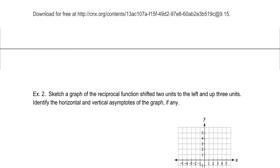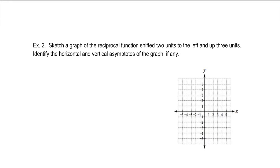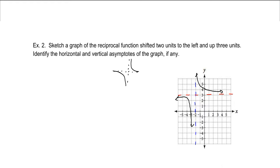For our next example, we want to sketch a graph of the reciprocal function shifted two units to the left and up three units, and identify horizontal and vertical asymptotes. The parent function has horizontal and vertical asymptotes both at zero. Shifting left two units moves our vertical asymptote two units to the left. Shifting up three makes our horizontal asymptote at positive three. Based on the shape of the function, we sketch it accordingly.